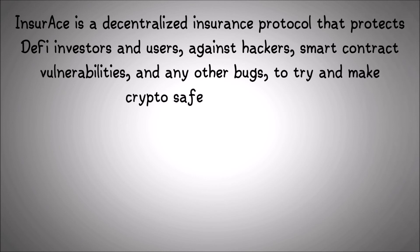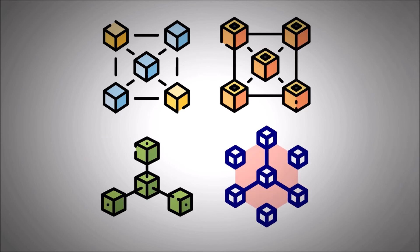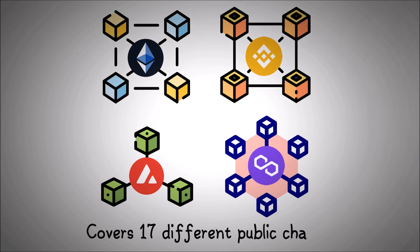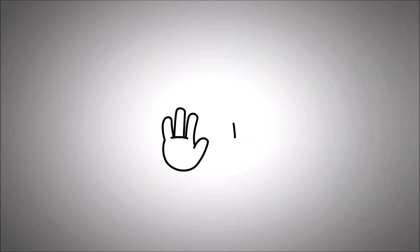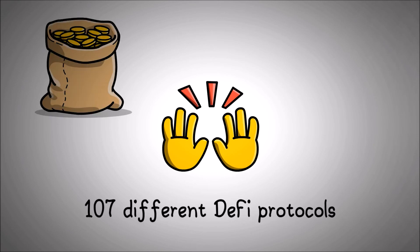InsurAce is a decentralized insurance protocol that protects DeFi investors and users against hackers, smart contract vulnerabilities, and any other bugs to try and make crypto safer for everyone. InsurAce is built on four different chains: Ethereum, Binance, Polygon, and Avalanche, and covers 17 different public chains.